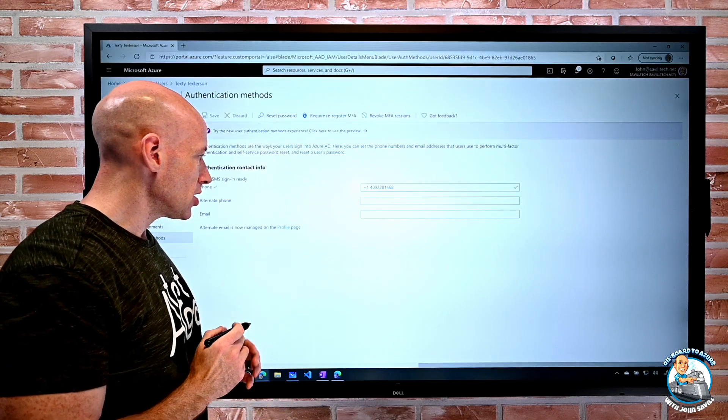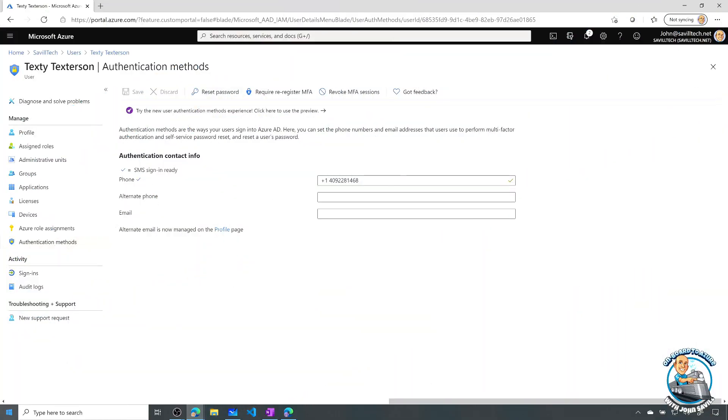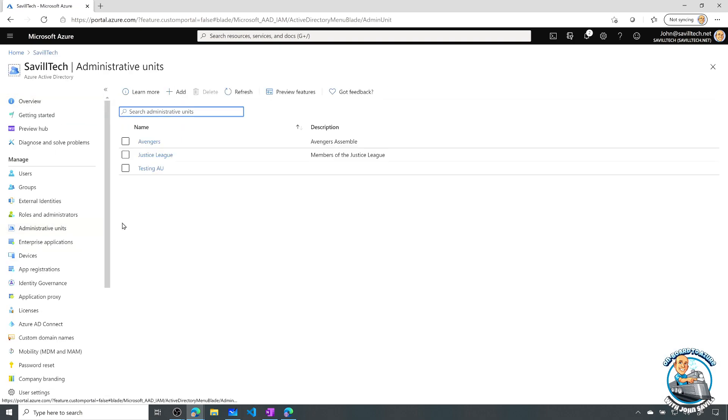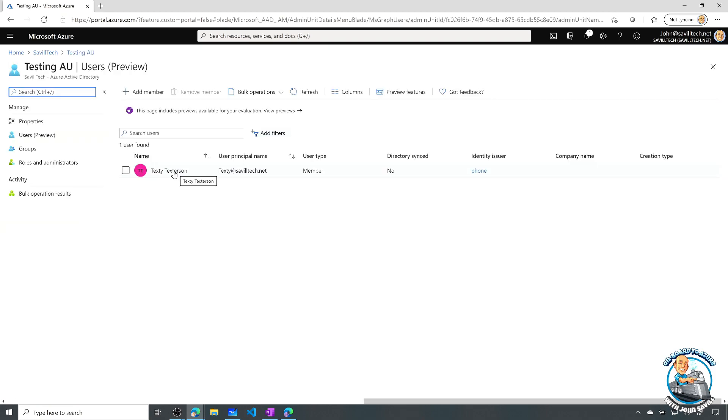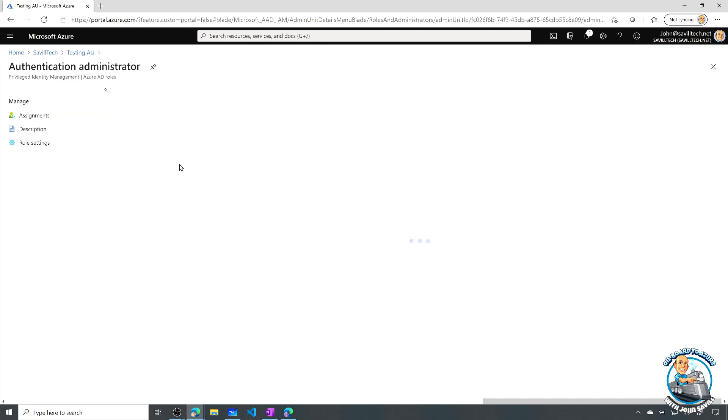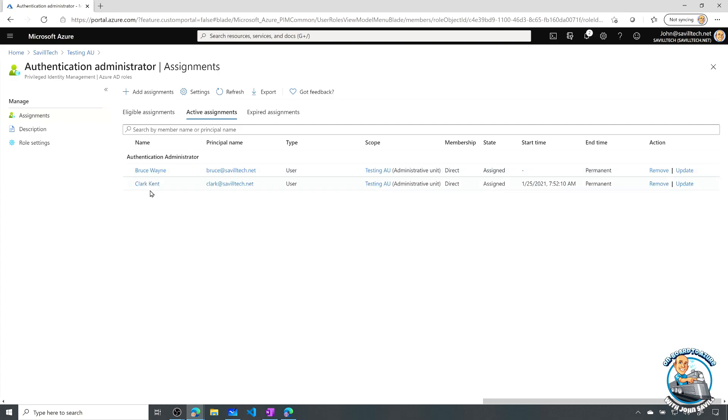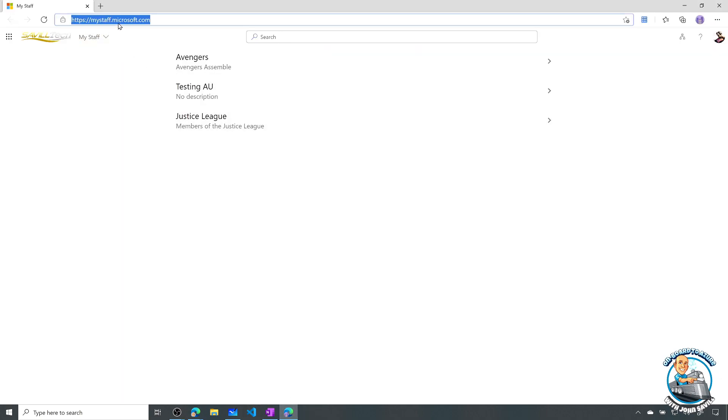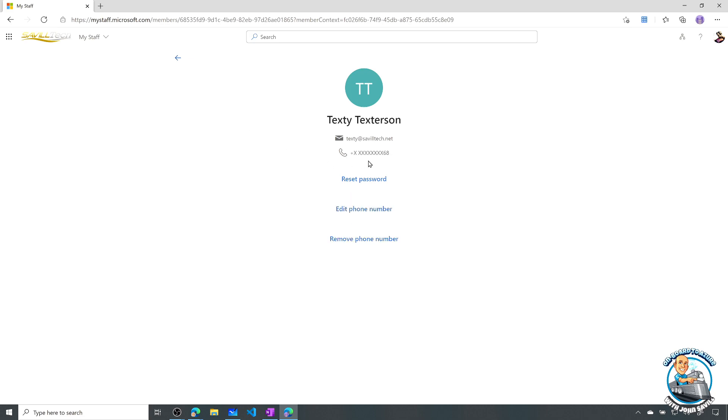So in this case if I jump back to my Azure AD, for this user I have actually put them in an administrative unit. So if I go and look at my administrative units, I've got this testing AU and there's Texty Texterson. And then I gave an authenticate administrator to Clark Kent. So both Clark Kent and Bruce Wayne can manage those. So as Clark Kent, notice I have this My Staff, aka.ms/mystaff. It gives me this simple interface to manage my users. So in this case I could go to my testing AU. There's Texty Texterson. And from there, there's the phone number. But I could do things like I could edit on their behalf. I could remove the phone number. So I have that capability.